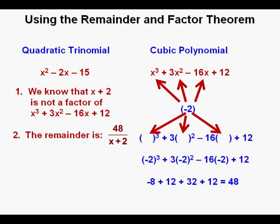And secondly we know that after dividing x cubed plus 3x squared minus 16x plus 12 by the binomial x plus 2, the remainder of that division is 48 divided by x plus 2. We don't get the entire answer by using the remainder theorem, but we do get the remainder. And that can help us a lot.